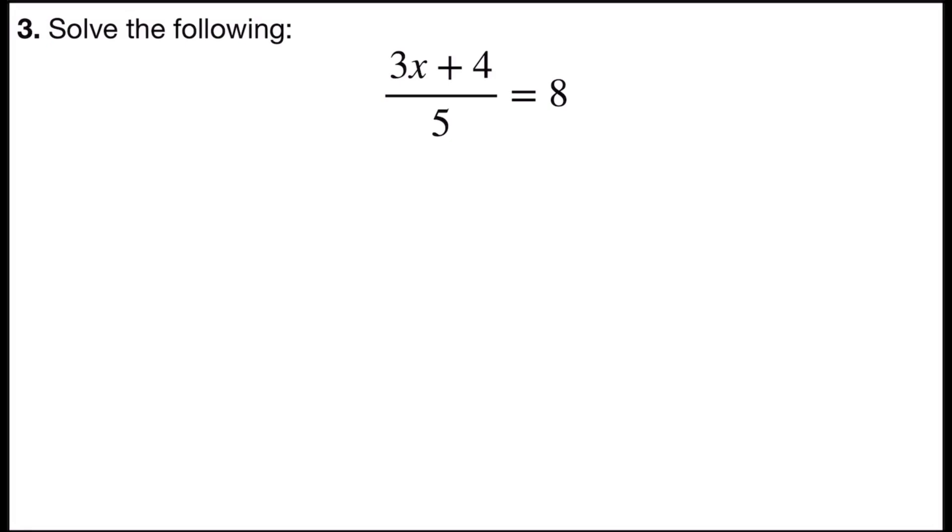First, I'm going to clear out any fractions by multiplying both sides by the least common denominator. The left side does have a fraction, and the least common denominator, in fact the only denominator, is 5. And I can put 5 over 1 to help show the multiplication.